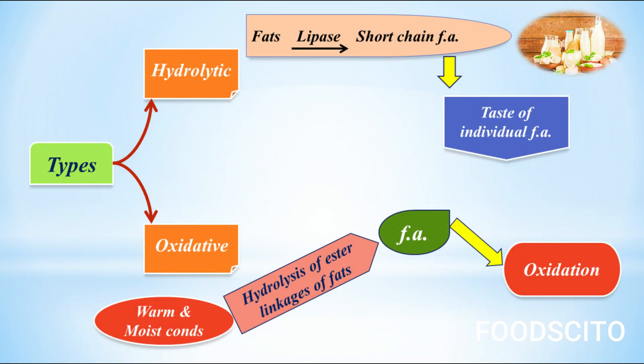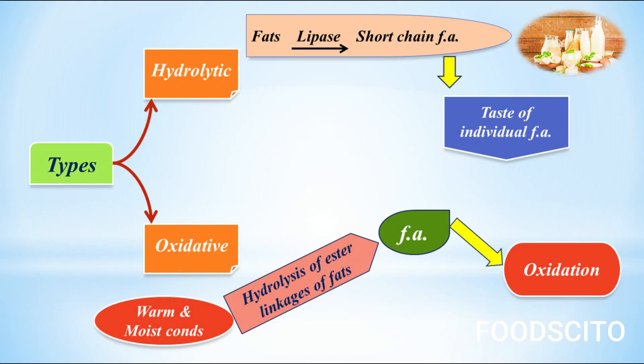Let's understand both one by one. Hydrolytic — the name suggests that fats are undergoing hydrolysis. Deterioration of fat due to hydrolysis is of primary concern in the case of dairy products. Naturally present lipase in dairy products, when it acts on fats, leads to their hydrolysis, producing short-chain fatty acids — for example, butyric acid. These short-chain fatty acids are particularly perceived by the sensory buds present on our tongue.